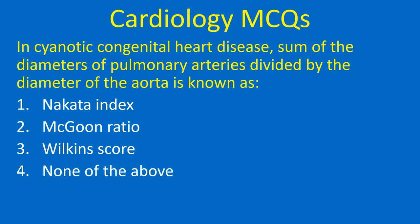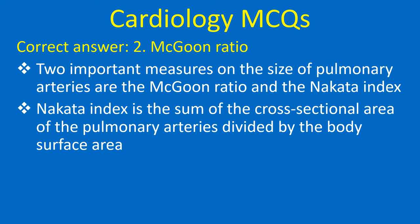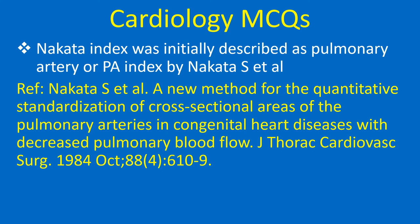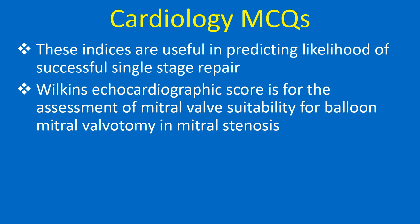In cyanotic congenital heart disease, the sum of the diameters of pulmonary arteries divided by the diameter of the aorta is known as: 1. Nakata index, 2. McGoon ratio, 3. Wilkins score, 4. None of the above. Correct answer: 2. McGoon ratio. Two important measures of pulmonary artery size are the McGoon ratio and the Nakata index. Nakata index is the sum of the cross-sectional area of the pulmonary arteries divided by the body surface area. Wilkins echocardiographic score is used for assessment of mitral valve suitability for balloon mitral valvotomy in mitral stenosis.